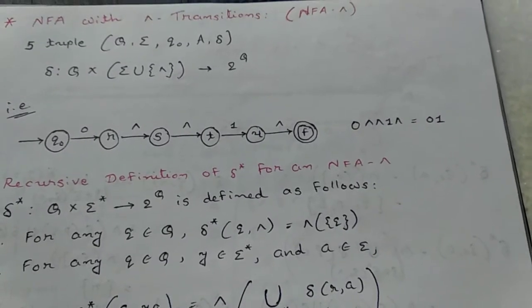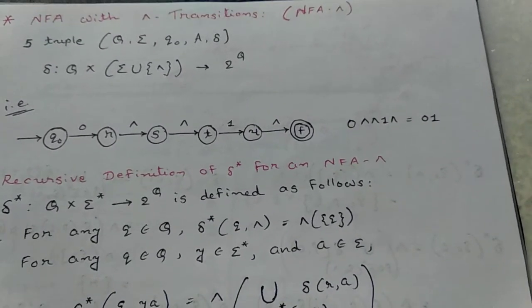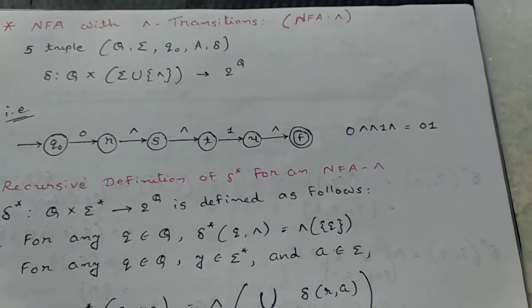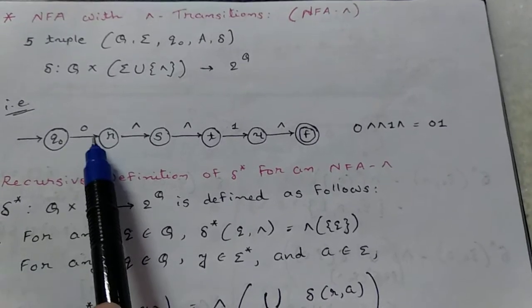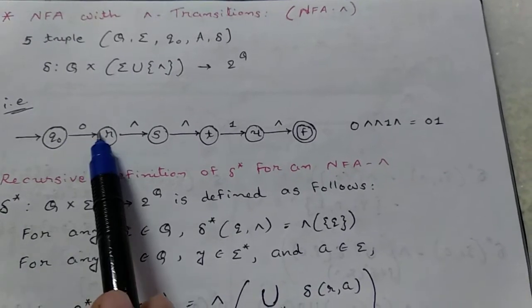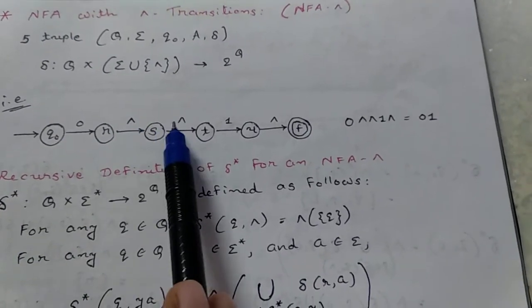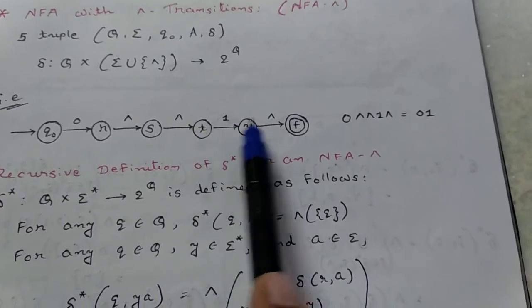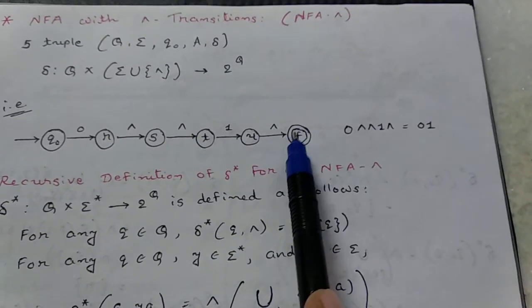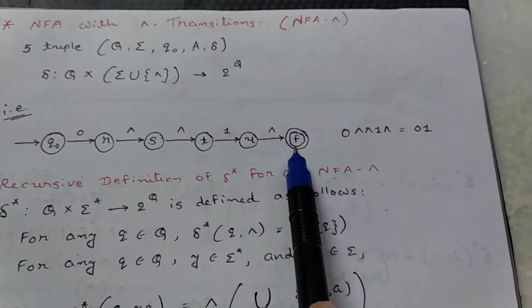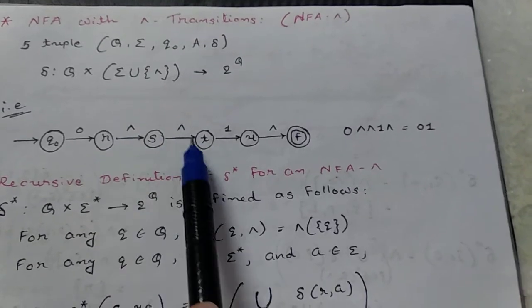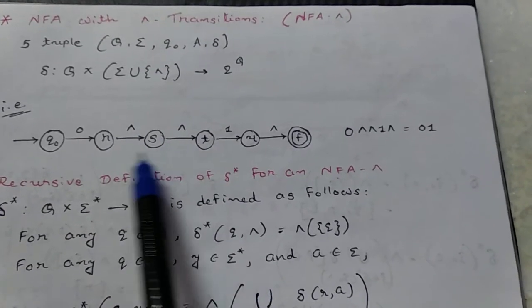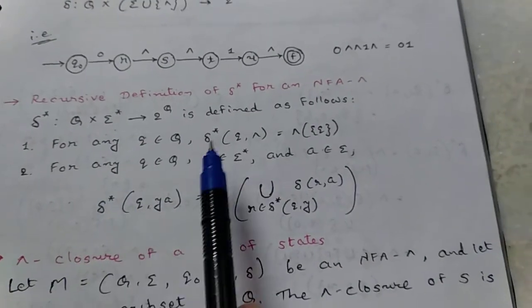In NFA epsilon, you have epsilon transitions. For a simple zero-one string, you know how to draw the FA. Using NFA epsilon, it is represented like this: q0 to 0, then r, then after an epsilon transition, then after another epsilon transition, then after one, then after epsilon transition which leads to a final state. The number of epsilon transitions may vary.